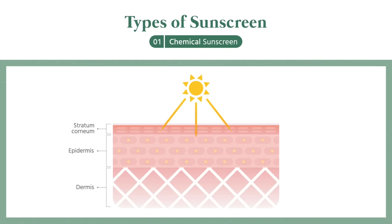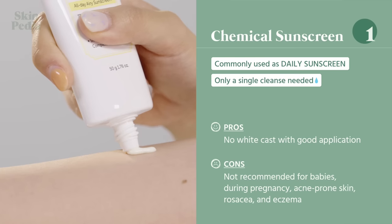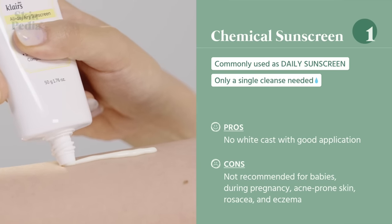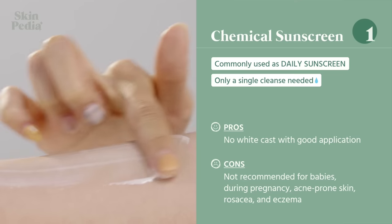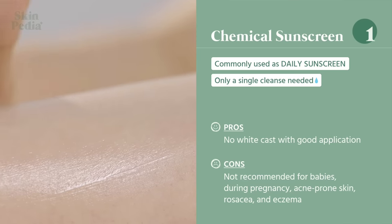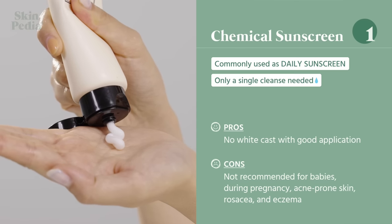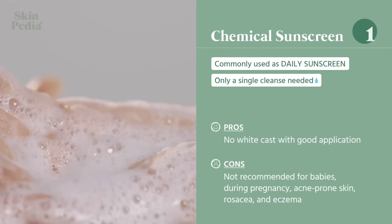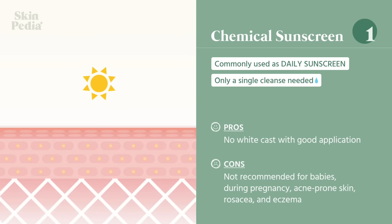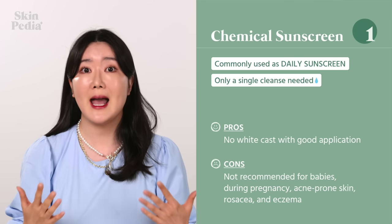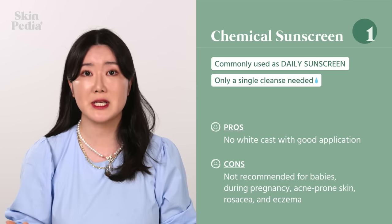Chemical sunscreens absorb UV rays into the skin and dissipate them by releasing them as heat. The pros are that it doesn't have a white cast and has a good application. That's why it's preferred by most skin types, but especially by dry skin types. Chemical sunscreens are removed easily just by a single cleanse, so they are often used for daily use. The cons are that since it blocks UV rays by absorbing them into the skin and releasing them as heat, it's not recommended for babies, pregnant women, acne-prone skin, or skin with rosacea or eczema.